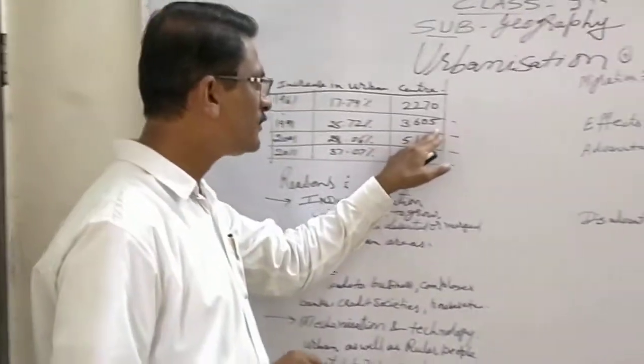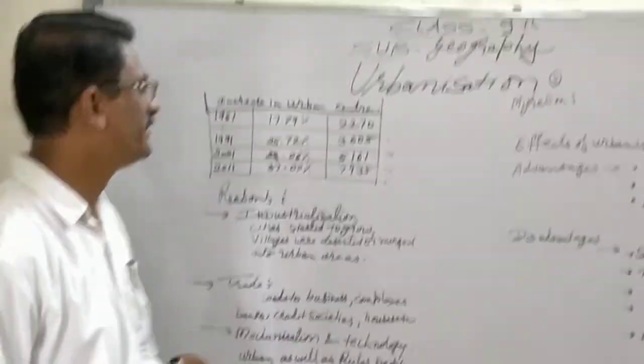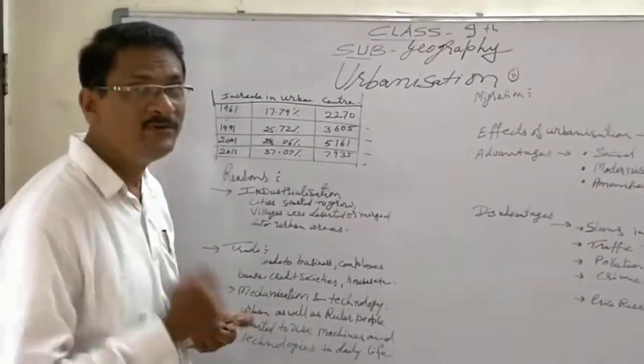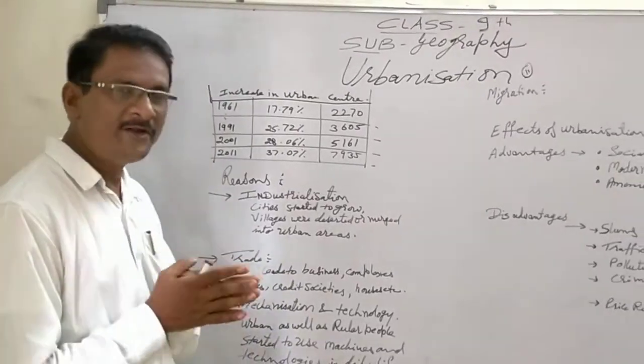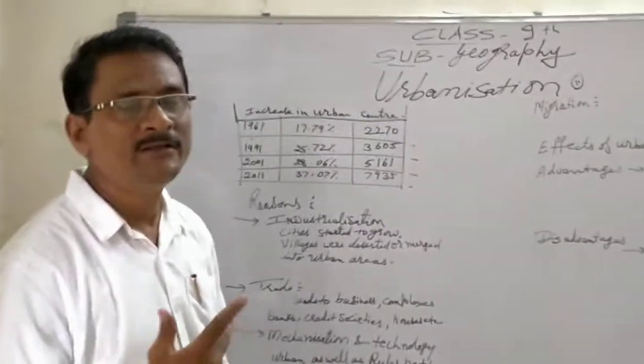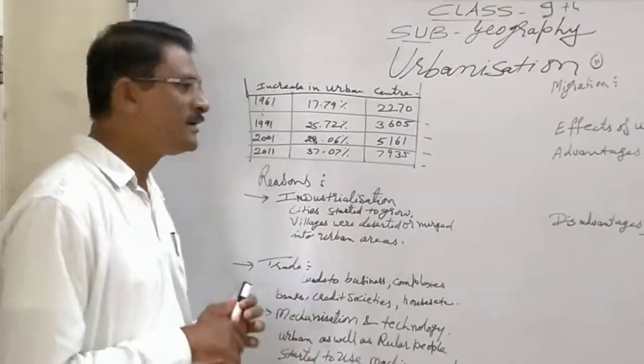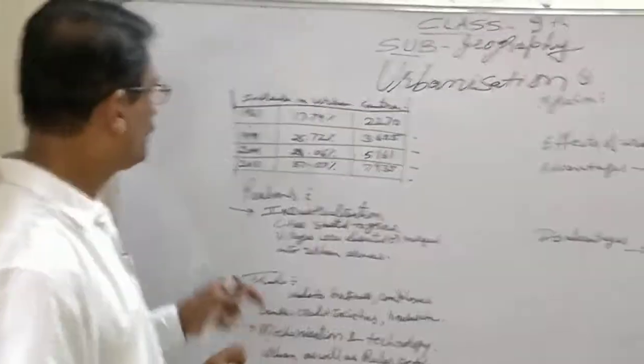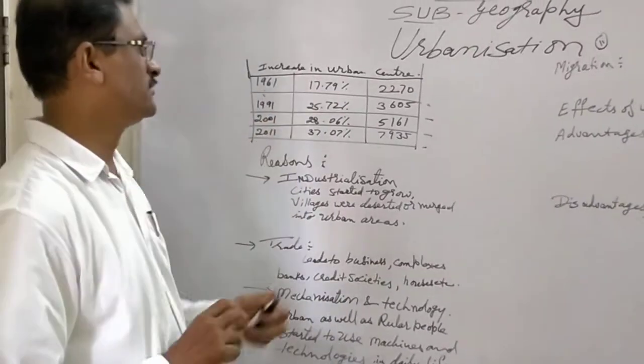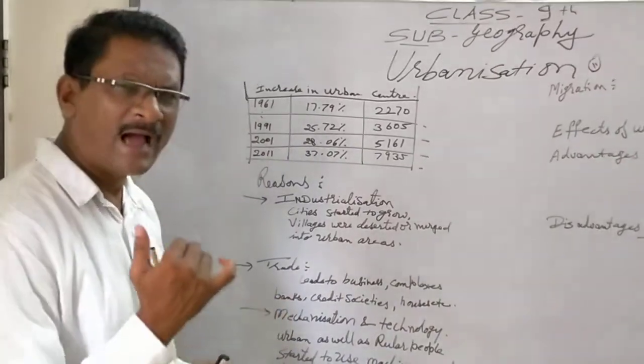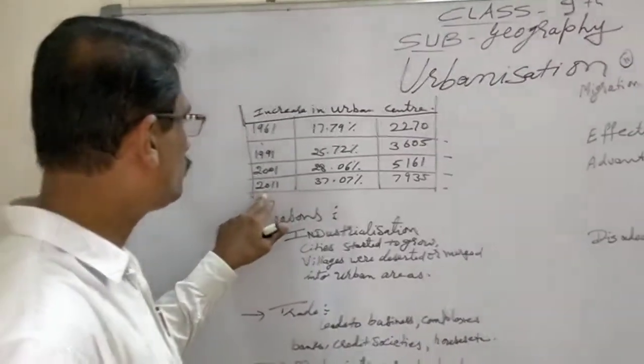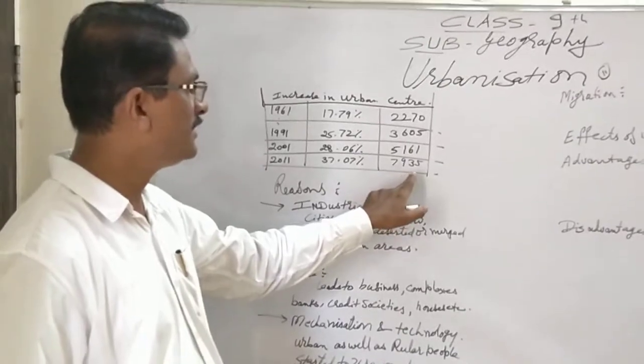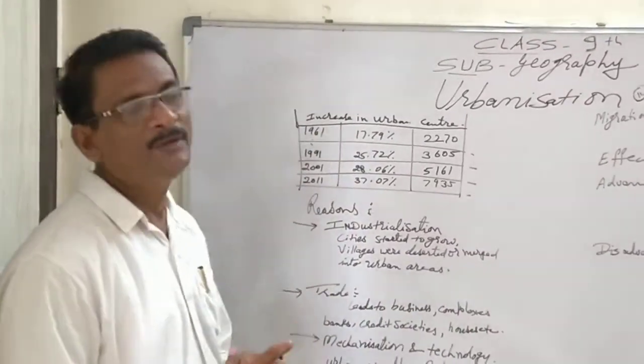Whereas urban centers increased to 3600. But in 1991 because of the new economic policies adopted by India under the leadership of P.V. Narasimha Rao, the trend of urbanization started to increase, it gathered momentum. From 1991 onwards which was only up to 25%, in 2001 it rose to 28%. And then we see a hike in urbanization which in 2011 rose to 31.7%.